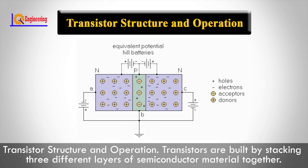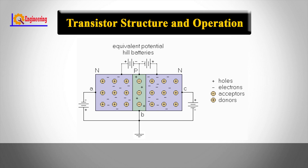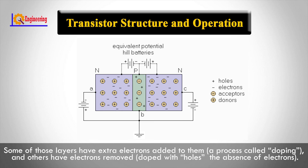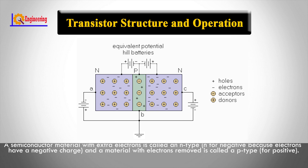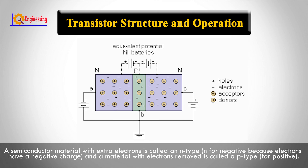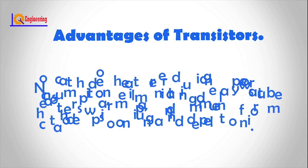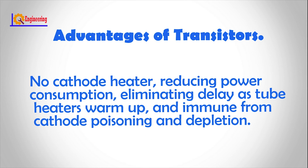Transistors are built by stacking three different layers of semiconductor material together. Some of those layers have extra electrons added to them, a process called doping, and others have electrons removed — doped with holes, the absence of electrons. A semiconductor material with extra electrons is called an N-type, N for negative because electrons have a negative charge, and a material with electrons removed is called a P-type, for positive.